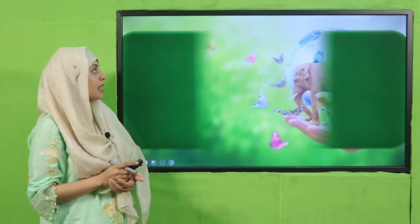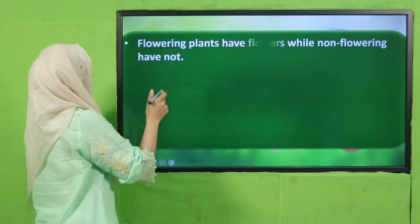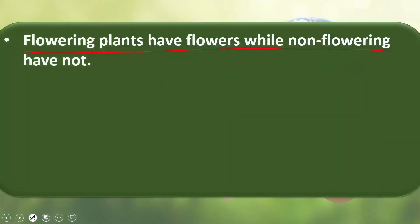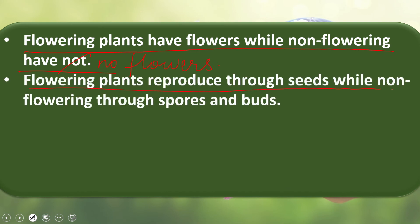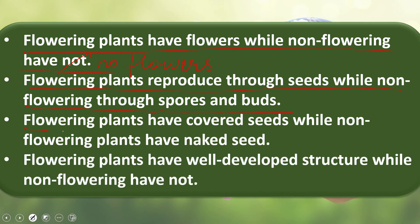Today we have learned that: flowering plants have flowers while non-flowering plants have no flowers; flowering plants reproduce through seeds while non-flowering plants reproduce through spores and buds; flowering plants have covered seeds while non-flowering plants have naked seeds; and flowering plants have a well-developed structure while non-flowering plants do not have a well-developed structure.